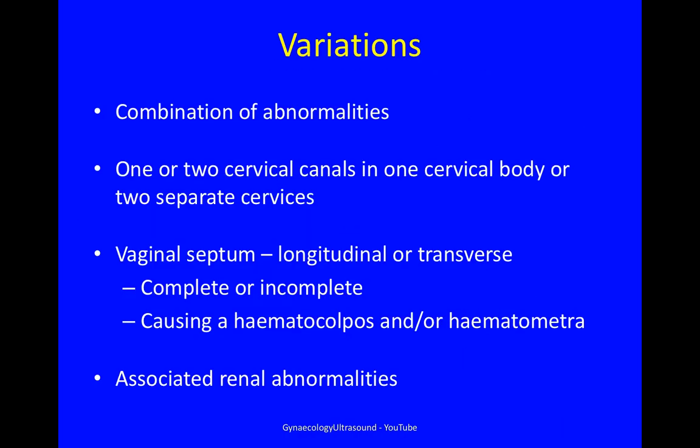You can have a combination of abnormalities. You can have one or two cervical canals in one cervical body, or two separate cervices. There can also be a vaginal septum, particularly in a septate uterus — this can be longitudinal and/or transverse, complete or incomplete. If it causes obstruction, it causes a haematocolpos and/or haematometra. Always scan the kidneys, because there can be associated renal abnormalities.